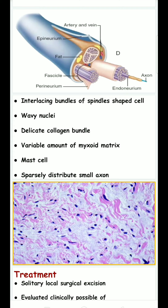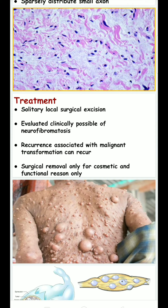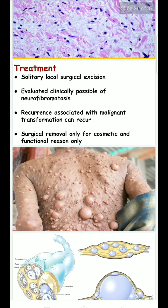Also seen are mast cells and sparsely distributed small axons. The treatment for solitary neurofibroma is local surgical excision. Clinically, evaluate the possibility of neurofibromatosis. Recurrence is associated with malignant transformation. Surgical removal is done only for cosmetic and functional reasons.